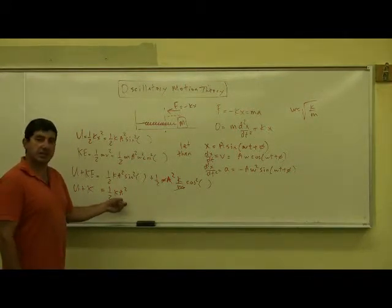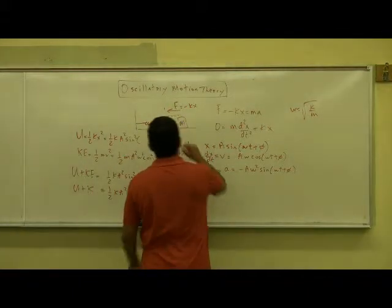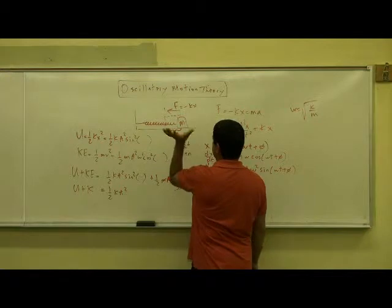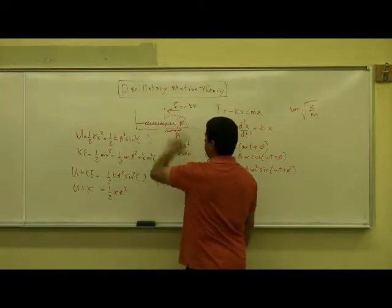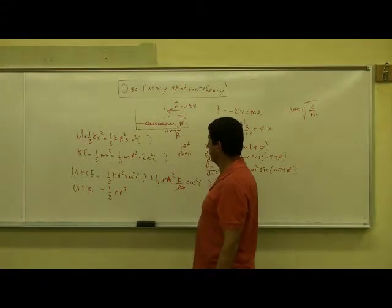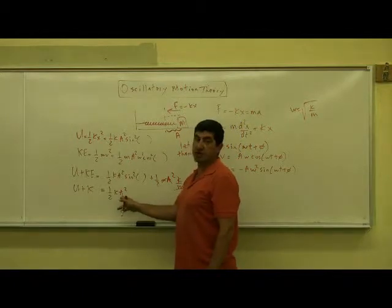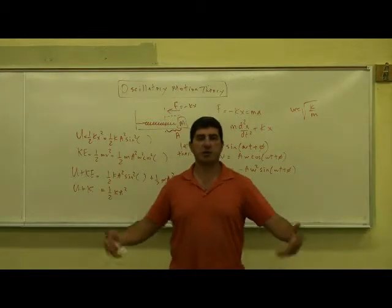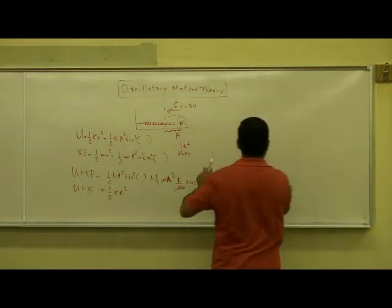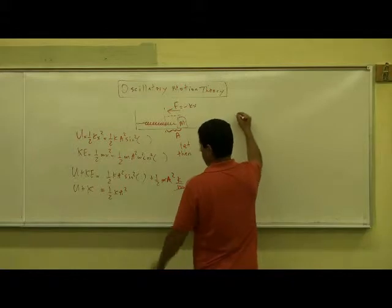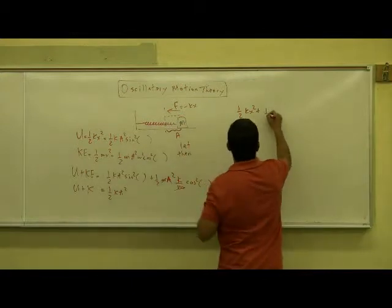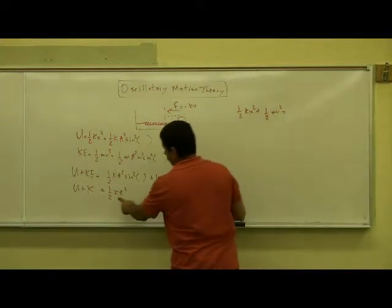The meaning of this constant is the maximum potential energy given to the system. Someone pulled the block and let it go, so the amplitude A is the maximum displacement given to it, and ½kA² is the maximum potential energy. The sum of potential and kinetic energy must always equal this constant value: ½kx² + ½mv² = ½kA².